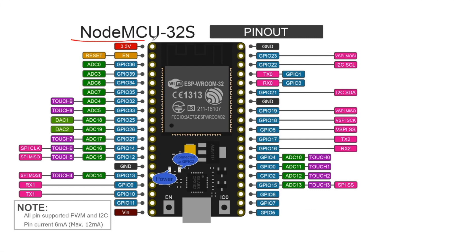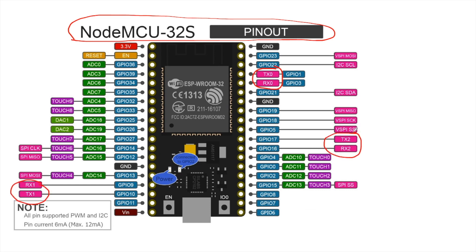This is the pinout of NodeMCU-32s. This is based on ESP32 and you will see that there are different pins here. You will see that there is TX0, then TX1, and then TX2. These are the hardware UARTs of ESP32 — UART0, UART1, and UART2.